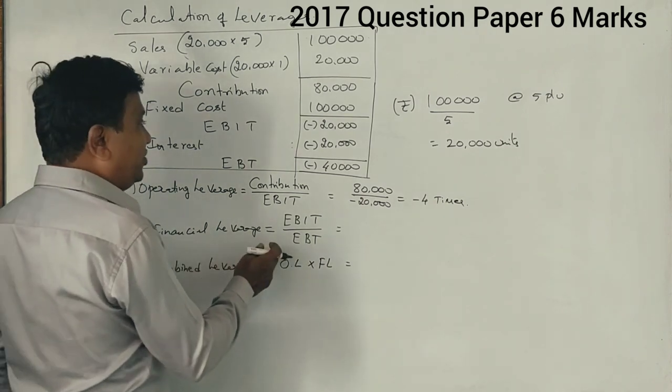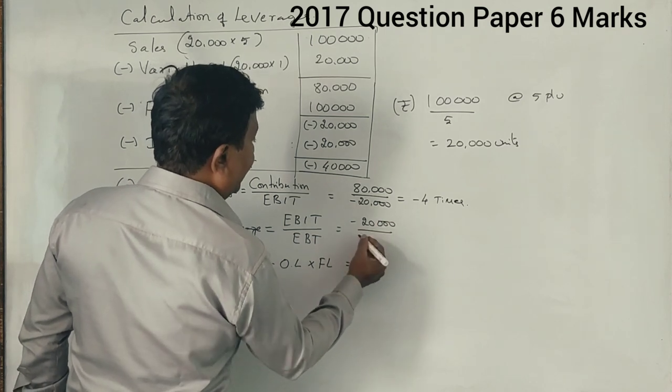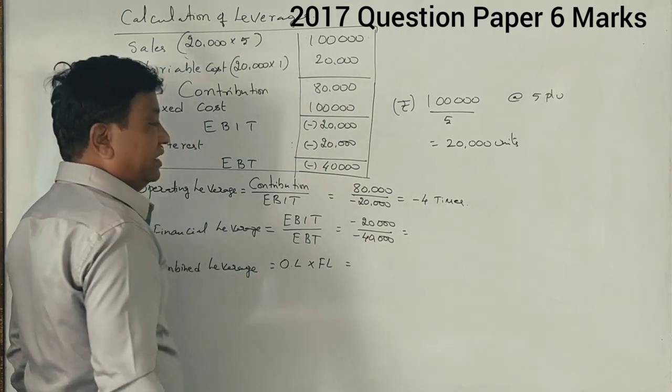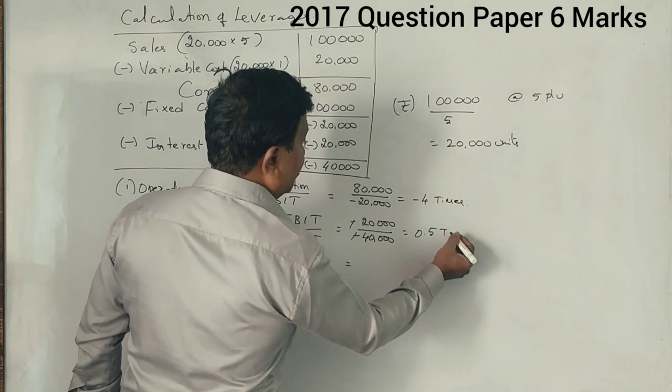And financial leverage we have minus 20,000 divided by minus 40,000. So we get minus minus cancel, 0.5 times.